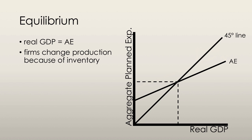When we talk about equilibrium, we want to find the point at which real GDP is equal to aggregate expenditure. We're going to enlist the help of the 45-degree line once again. The 45-degree line has a slope of one, so it tells us where aggregate planned expenditure equals real GDP at all points. We look for the point at which aggregate expenditure intersects the 45-degree line, because that's the point where aggregate planned expenditure equals real GDP. Equilibrium expenditure is the level of aggregate expenditure that occurs when planned aggregate expenditure equals real GDP — this is the point at which spending plans are fulfilled.